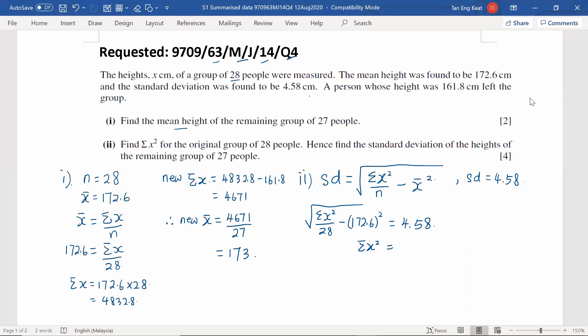So which is going to be 4.58 squared, then the minus 172.6 squared bring over right-hand side become plus 172.6 squared, and divided by 28 now is going to be multiplied by 28. And now we are able to find out the sigma X squared for this 28 people: 834728.62.